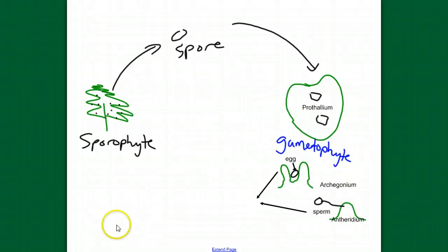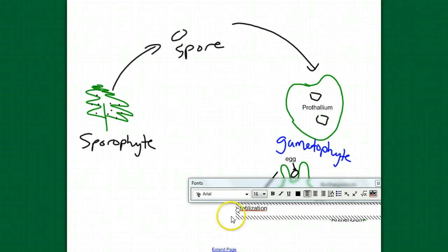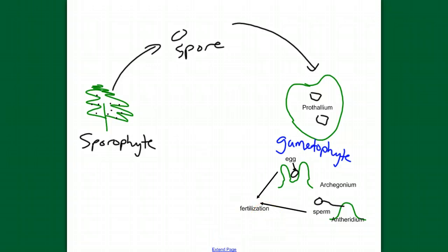I should bring the whole archegonium. So the next event is fertilization, which results in a zygote. And the zygote grows up to be a new fern or a sporophyte.